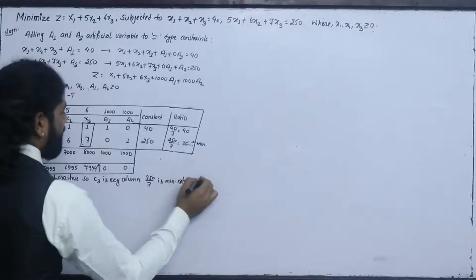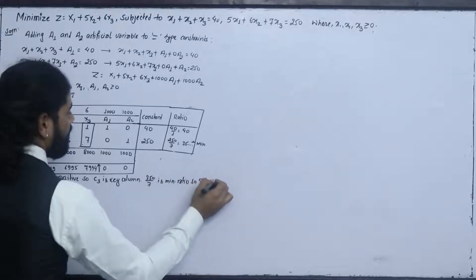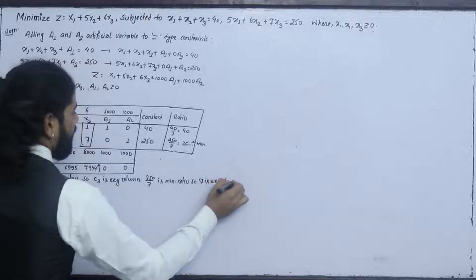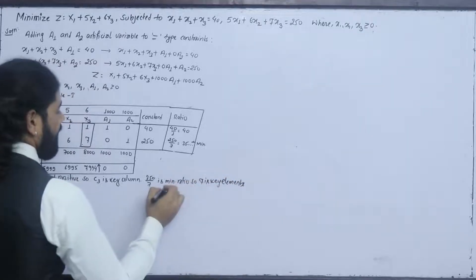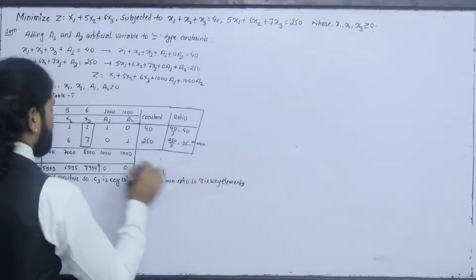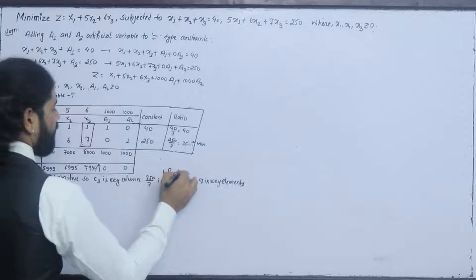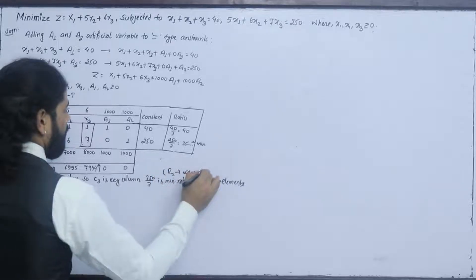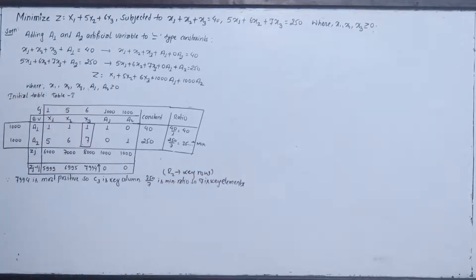So 7 is the key element. The key element equals R21, and we identify the key row.